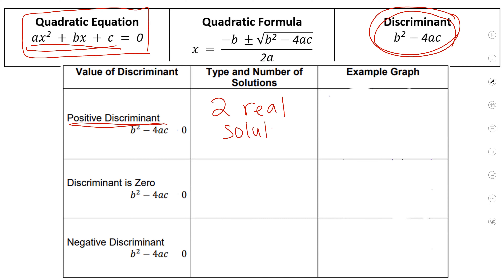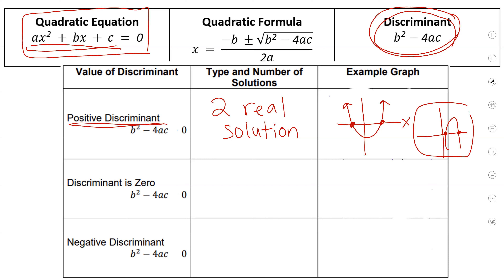Do you guys remember another word for solution? X-intercepts, yeah. So an example would be something that has two x-intercepts — a picture like this. It crosses the x-axis two times. Here's another example — it crosses two times. These are examples of graphs that have two real solutions. So if your graph crosses the x-axis twice, that means your discriminant was positive.